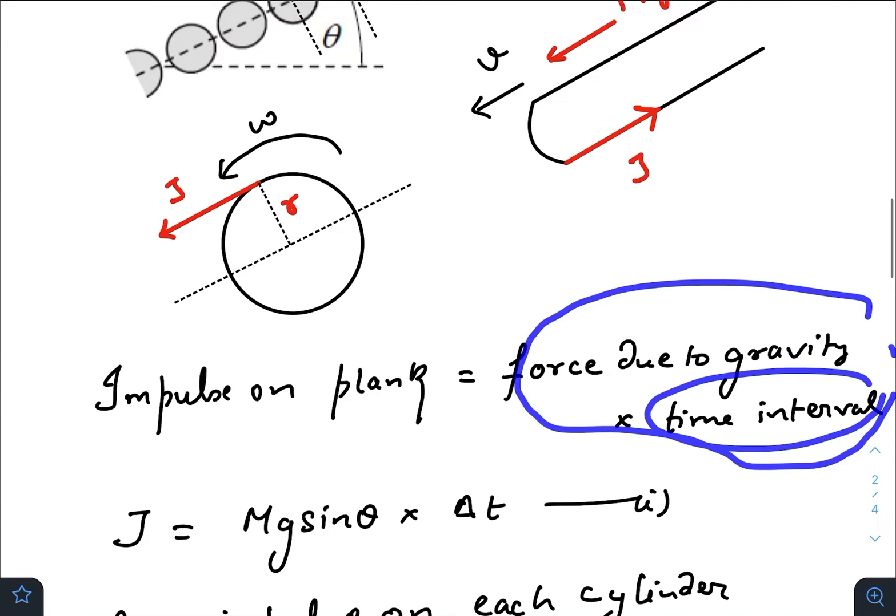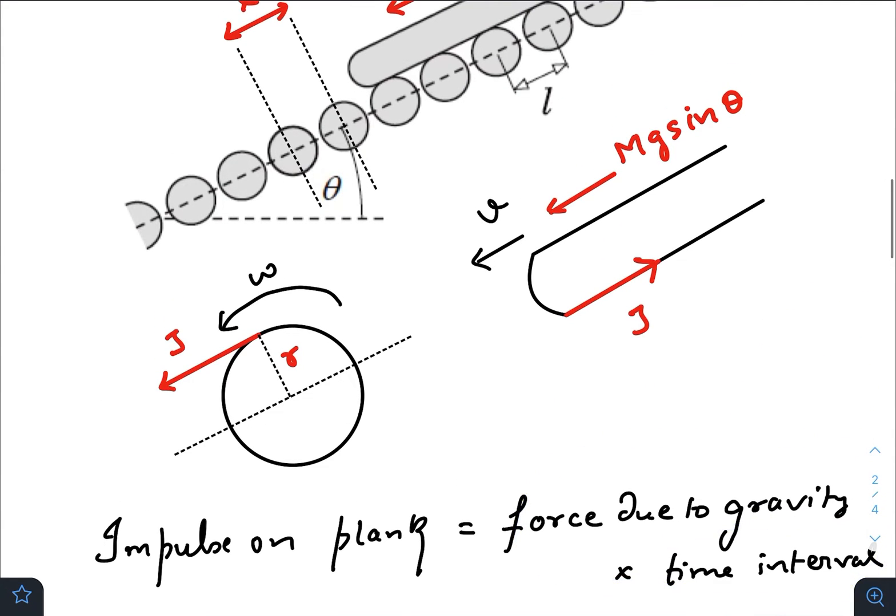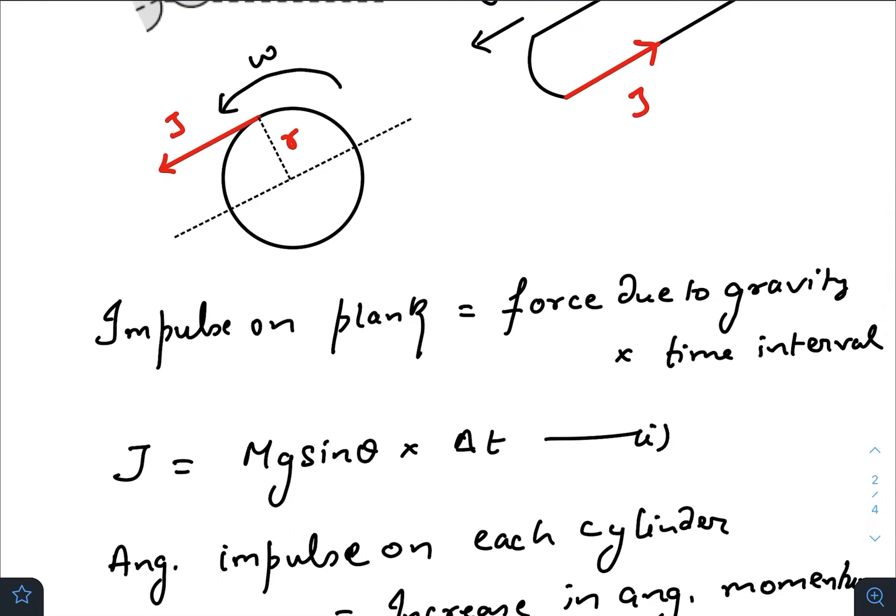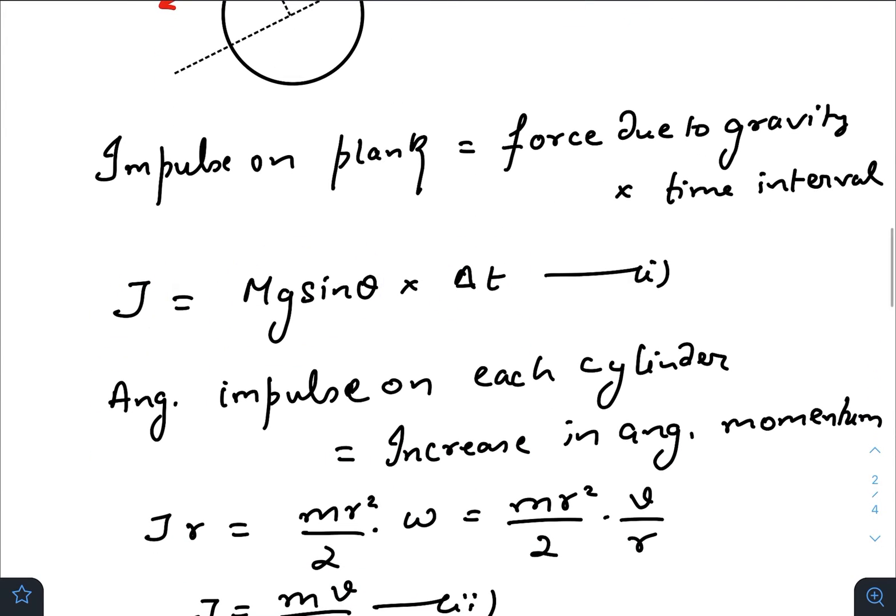Time interval means the time interval between two consecutive impulses due to two consecutive rollers. Let that time interval be Δt. So impulse is equal to mg sin θ times Δt. I am writing this equation for the steady state.